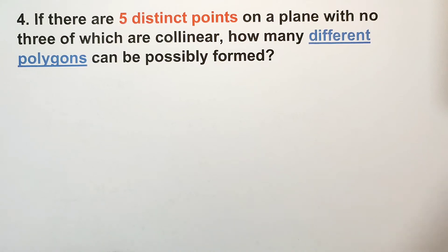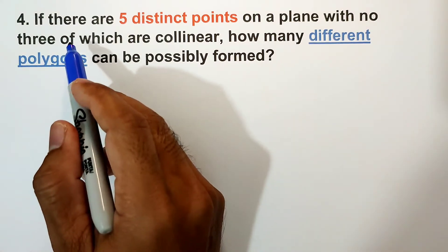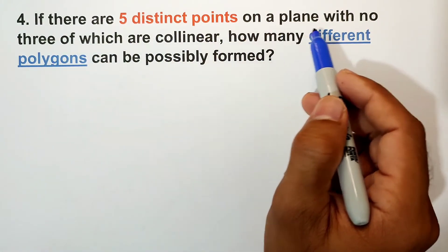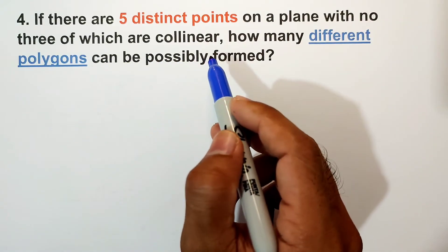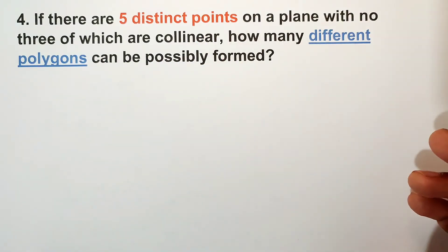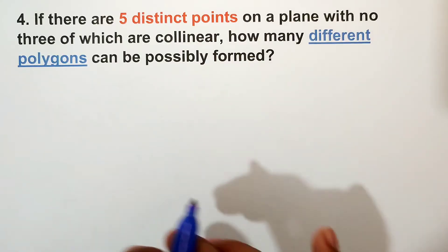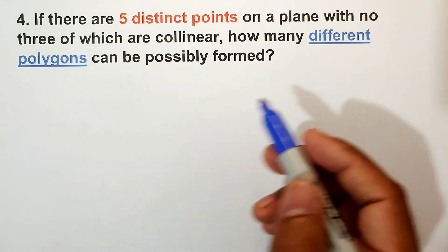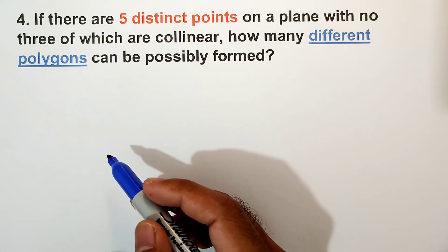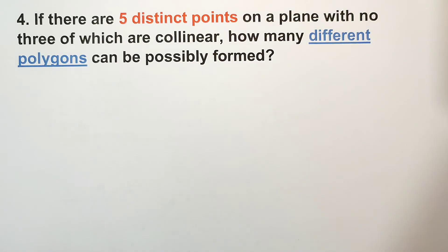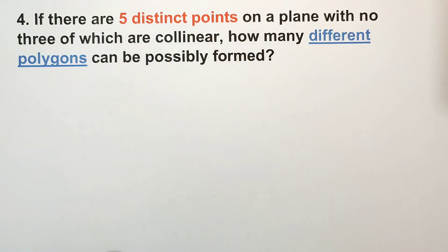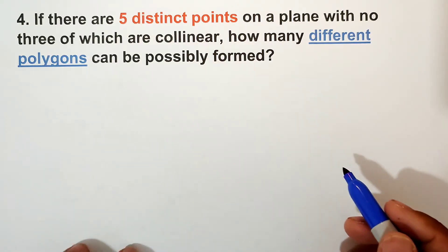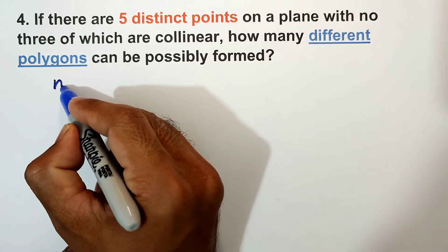Let us have another problem. If there are five distinct points on a plane with no three of which are collinear — meaning they are separate, different points — how many different polygons can possibly be formed? Let us identify the value of n. N is equal to five.